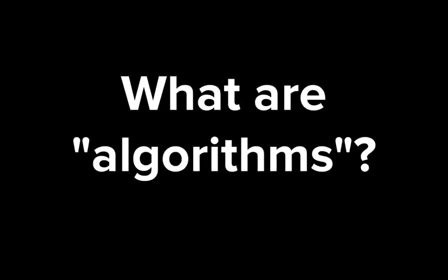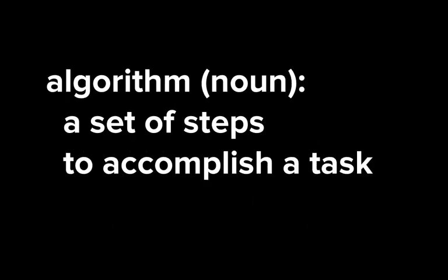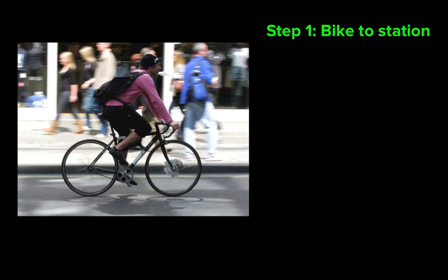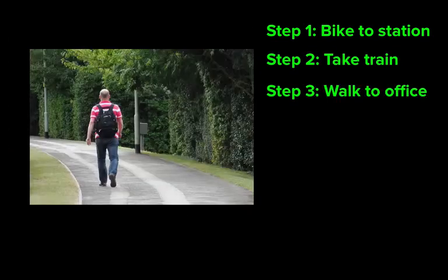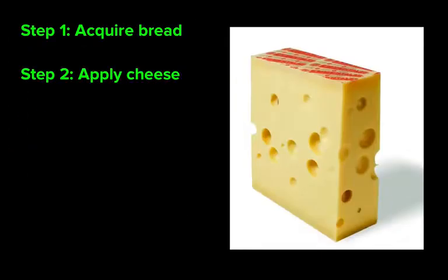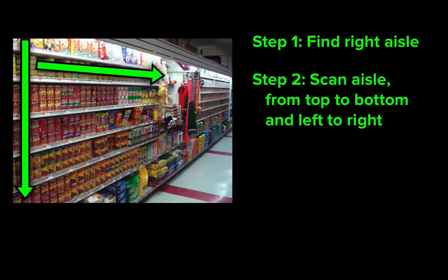What is an algorithm? A broad answer might be a set of steps to accomplish a task. You might have an algorithm for getting from home to school, for making a grilled cheese sandwich, or for finding what you're looking for in the grocery store.